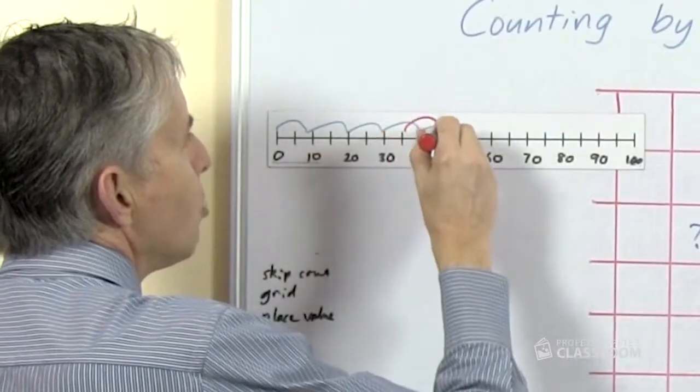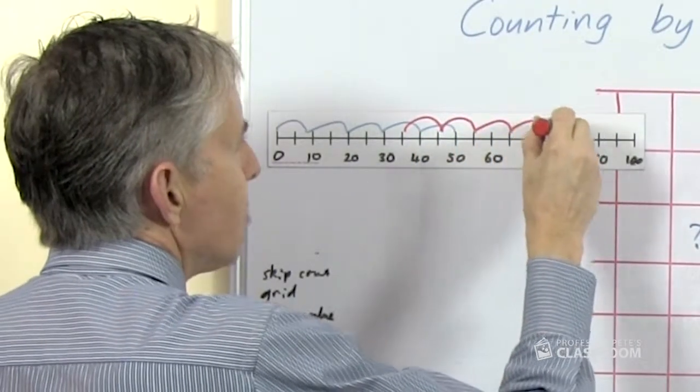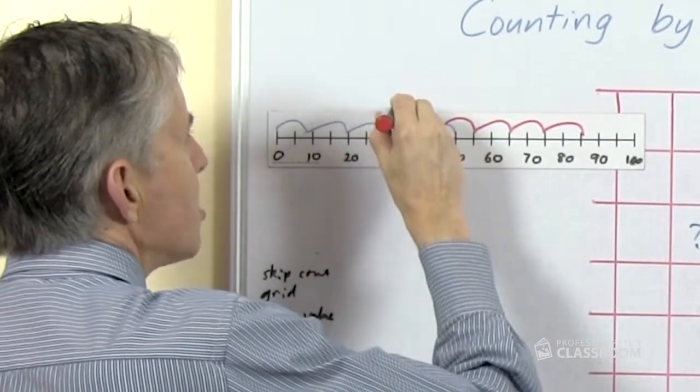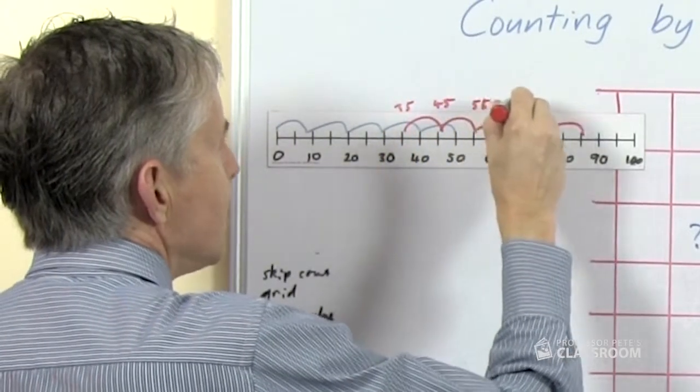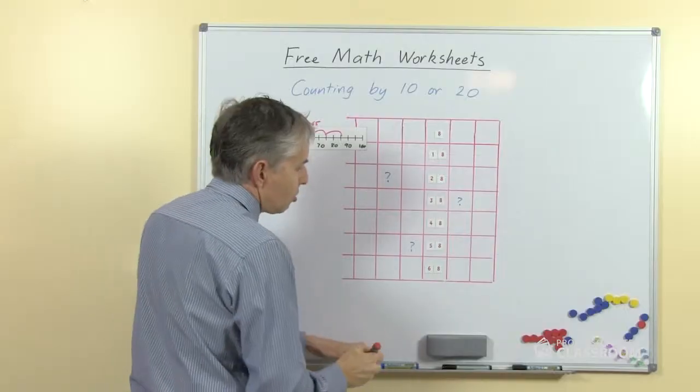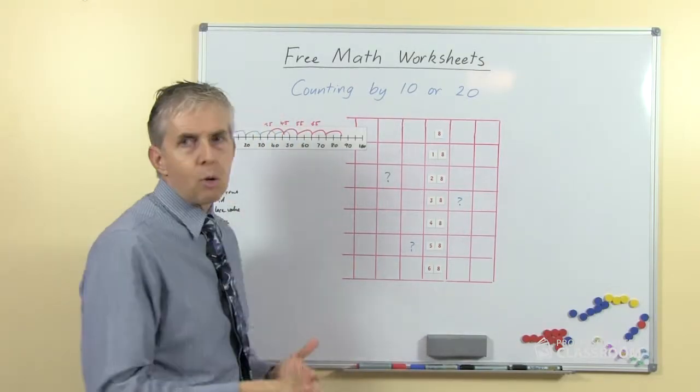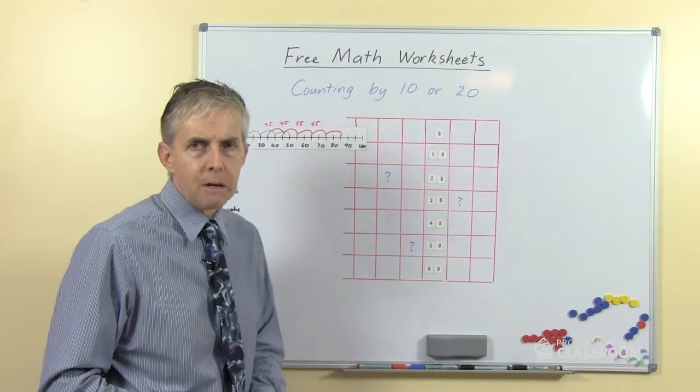So we could perhaps say, what pattern is this? What is this sequence of numbers? What do we know about it? So we'd have 35 and 45 and 55 and 65. And so there are other questions, other activities that you could do with a number line.